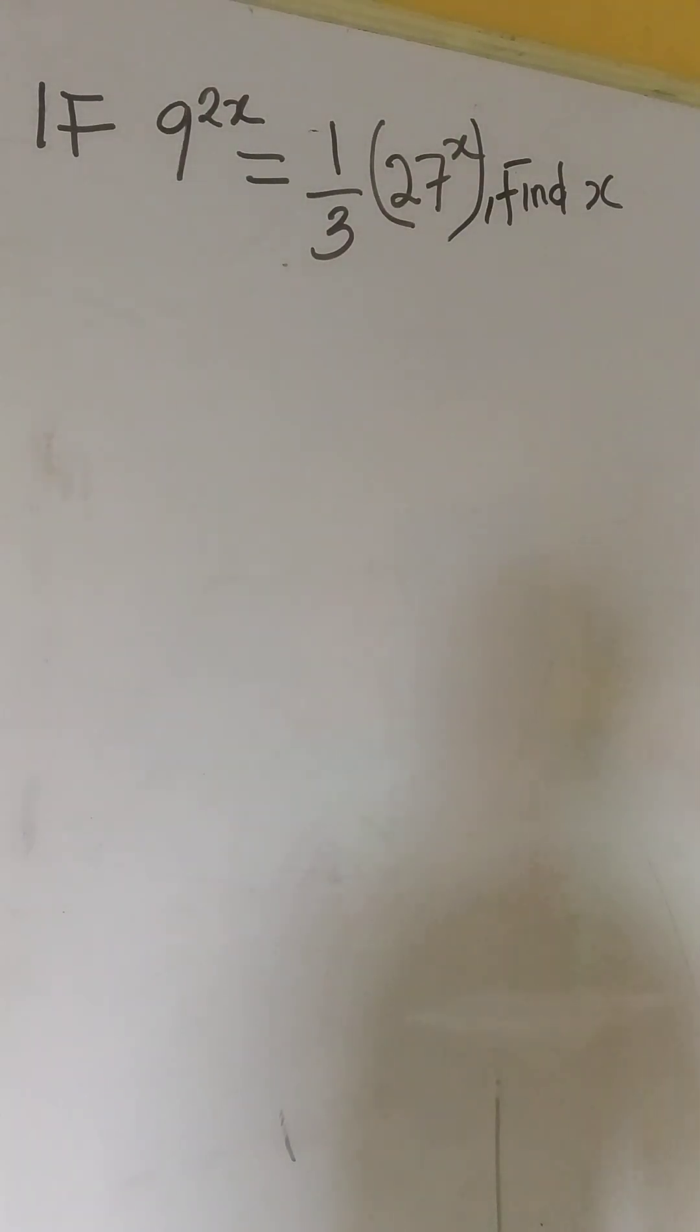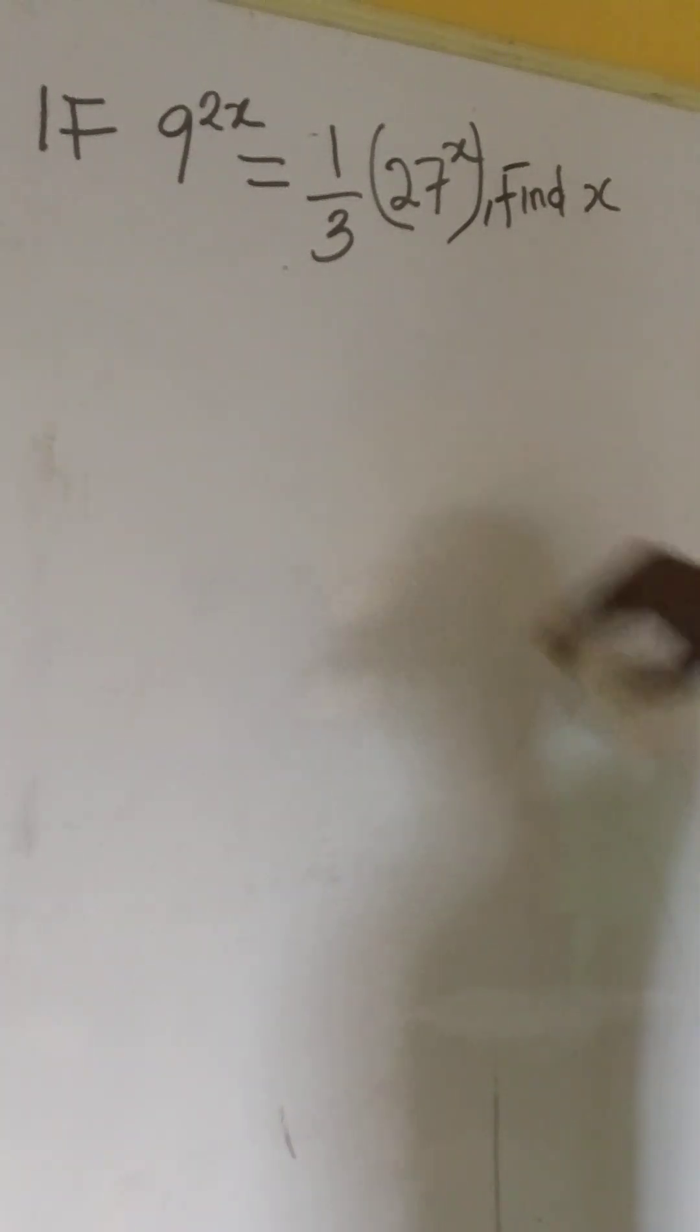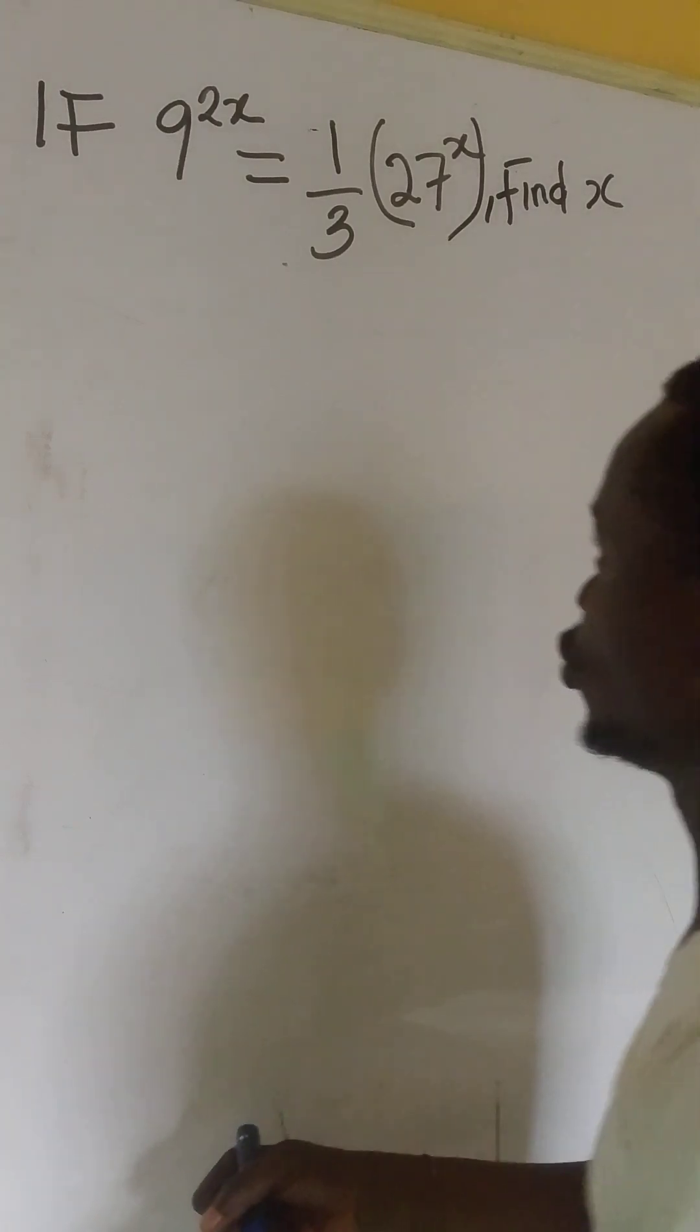The question says, if 9 to the power of 2x equals to 1 over 3 into bracket 27 to the power of x, find x. Now, our solution.